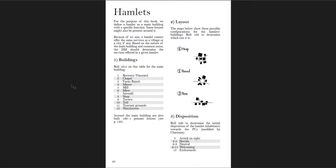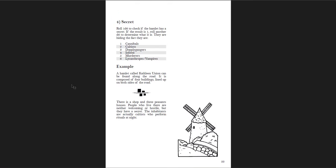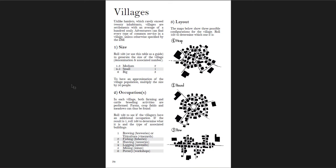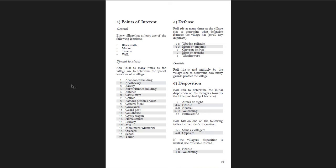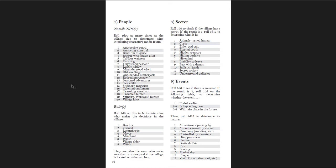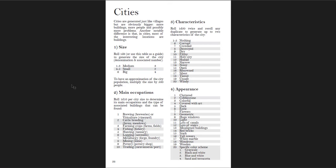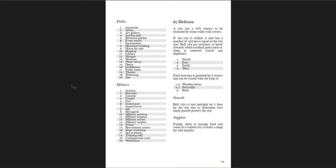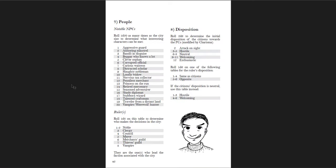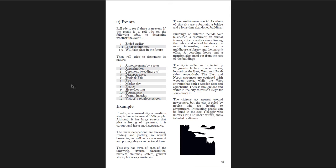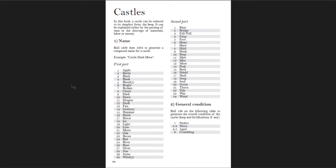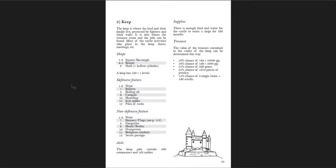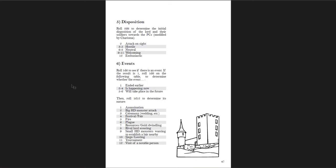You get hamlets with three different layouts, the disposition of the people there, and perhaps a secret — a one in six chance. Then you get villages with descriptions of size, occupations, layout, general points of interest, special locations, defense, people, secrets, and events. Then cities build up further each time with size, main occupations, characteristics, appearance, defense, notable NPCs, ruler, disposition, and events. Using all these tables, you'll come up with a city described in just a few paragraphs — it's up to you to fill out the rest, but it's a great place to start.